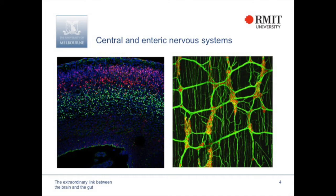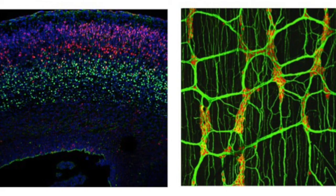You'll be familiar with the brain on the left, but you may not be so familiar with the nervous system that controls our gut. When we look at the central nervous system, you can see a beautiful organisation of different subtypes of neurons, labelled by different fluorescent labels, organised from the outside of the brain down to the inner region. There are lots of branches and processes connecting these neurons so that they can talk to each other.